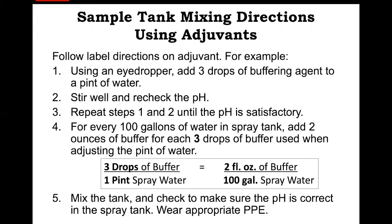To determine how much buffering agent to add to the tank, an applicator must know the pH of the water, the volume needed to treat, and the buffering agent used. Applicators should follow all buffering agent directions to determine exactly how much adjuvant to add to the tank. Some products give directions indicating the amount of buffering agent to be used with water of different alkalinity, but not all do. A simple protocol and calculations for determining the amount of buffering agent required for spray application are provided using a sample pint of spray water.